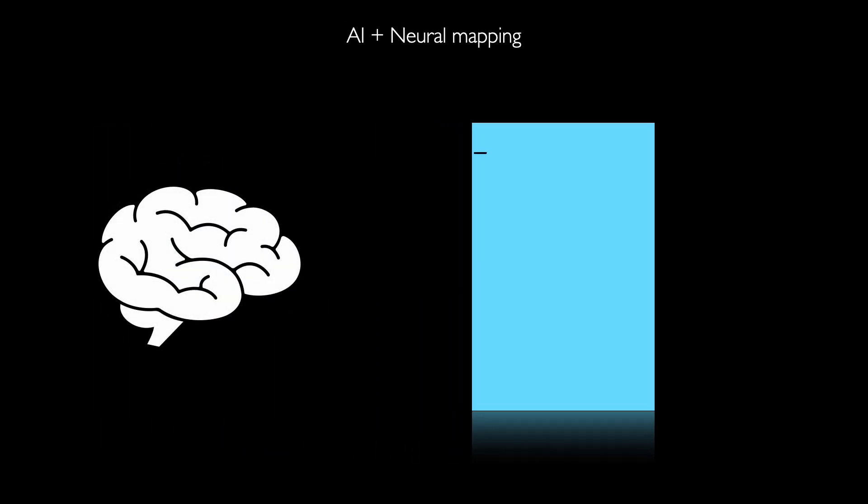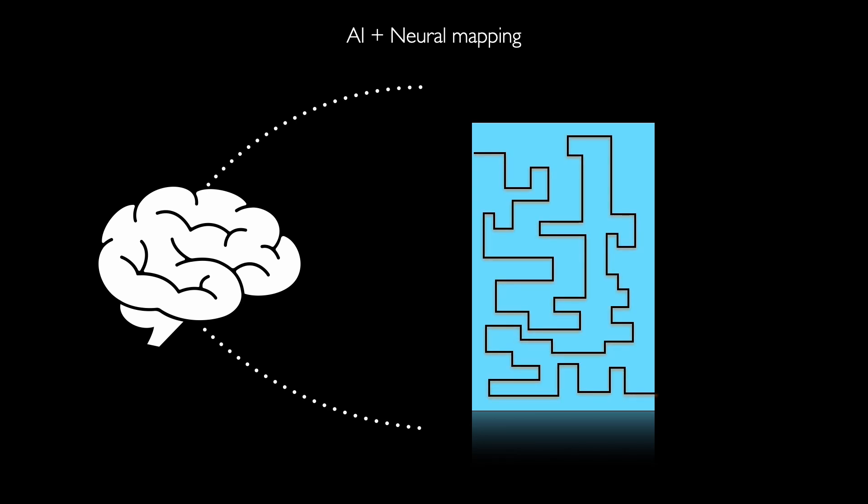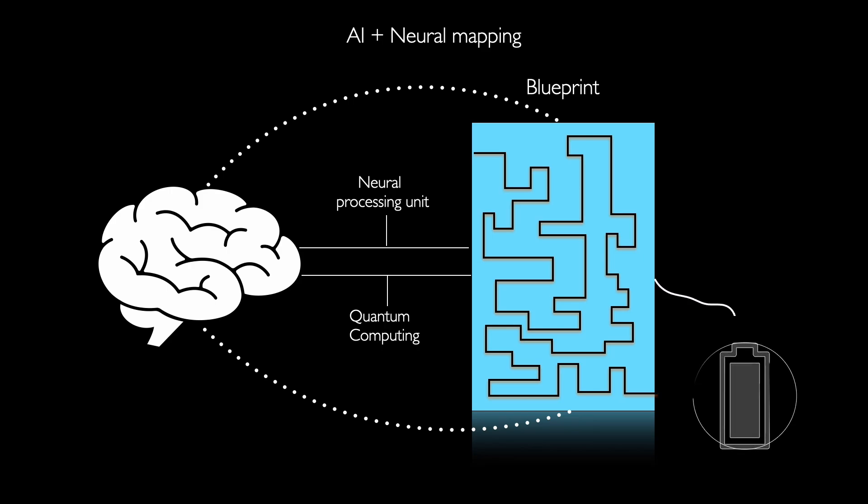And this could be possible gradually because AI and neural mapping technologies are capable of creating a virtual you by sketching out a blueprint of your brain. It's like backing up your favorite photos or messages, but in this case, instead of pictures, you're dealing with thoughts and memories. And powering this up with neural processing units and quantum computing can significantly accelerate this process.